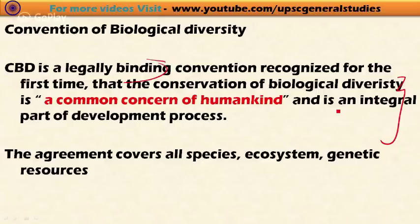For the first time, the conservation of biodiversity was declared a common concern of humankind in this convention. Conservation of biodiversity is considered an integral part of the development process — in the process of development of a country, conservation of biological diversity should also be taken into account. This is the main theme of the CBD.